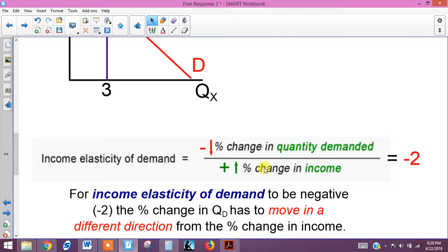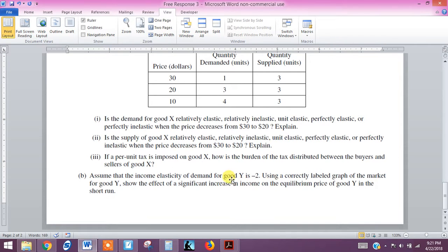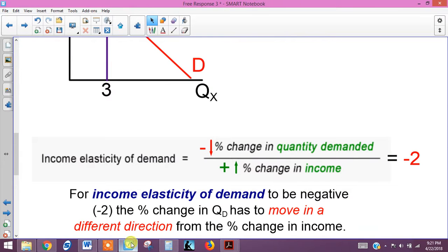And we know that income went up. That's what it states right here, it's an increase in income. So we know that the denominator is positive. So in order for the whole expression to be negative 2, the numerator, which is the percentage change in quantity demanded, has to be negative or has to be decreasing as the income or the denominator in this expression is increasing.